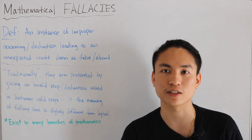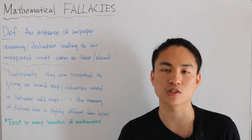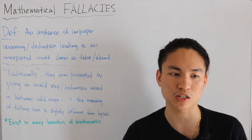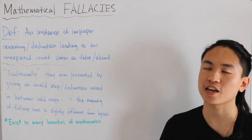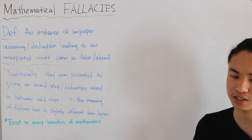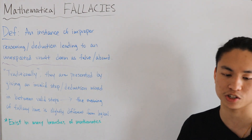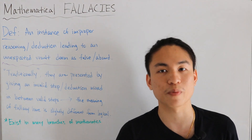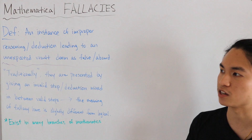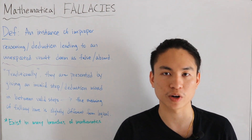Math fallacies exist across many branches of mathematics, and we'll go over a bunch of examples. There's a distinction between a simple mistake and a math fallacy: a simple mistake in a proof just leads to an invalid proof, whereas a math fallacy involves an element of deception in the presentation. It looks like a valid proof, but something in there doesn't actually work out correctly. This failure of validity is often attributed to division by zero hidden somewhere in algebraic notation.